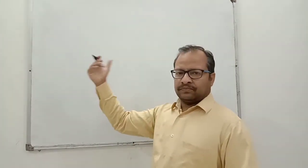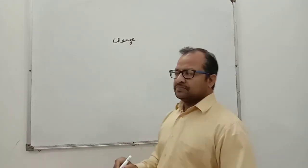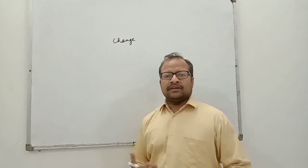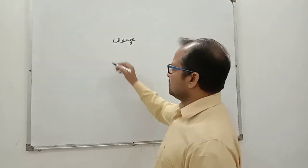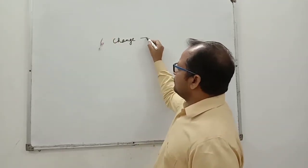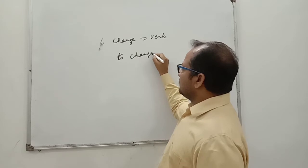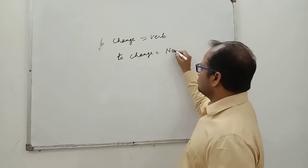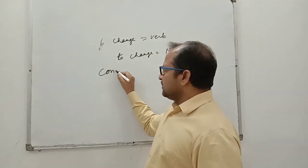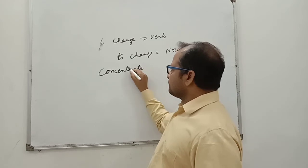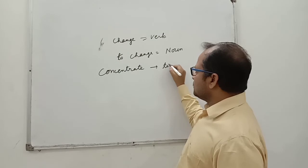Let's begin with the explanation part. If there is a verb like change, this is a verb. It can be converted into noun in form by using the word to change. This is a verb, but if I write to change, it will become as a noun. Similarly, if the verb is concentrate, it will be converted into noun by adding to plus first form.